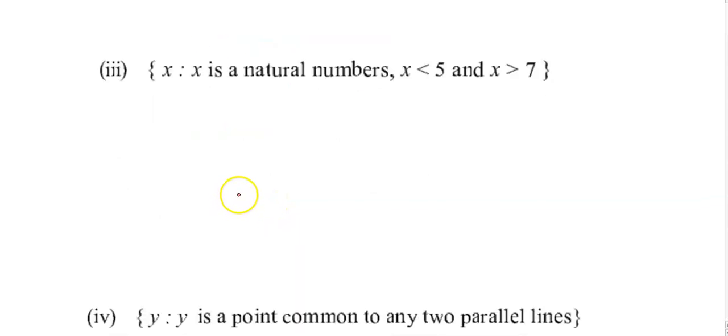x is a natural number less than 5 and greater than 7. There is no natural number which is less than 5 and greater than 7. Less than 5 would be 1, 2, 3, 4, and greater than 7 would be 8, 9, 10 and so on. Hence, the given set is a null set.